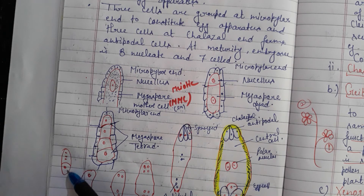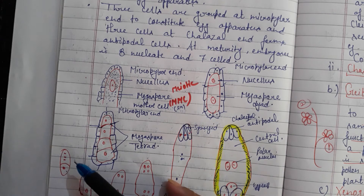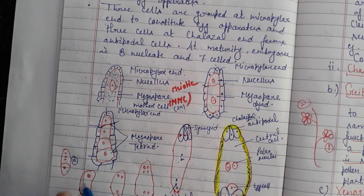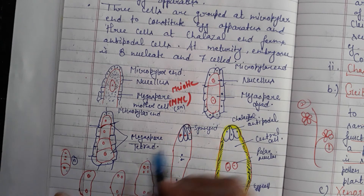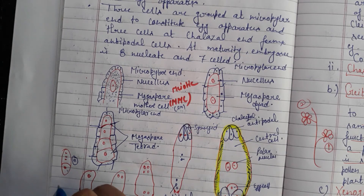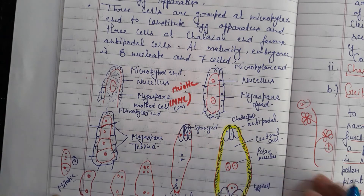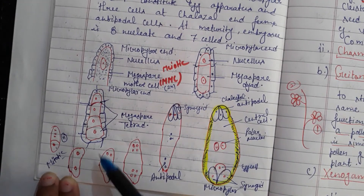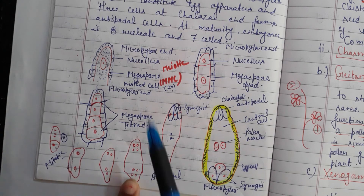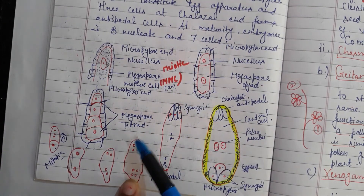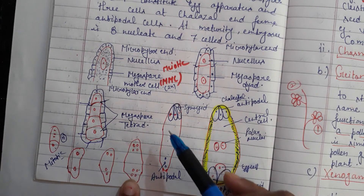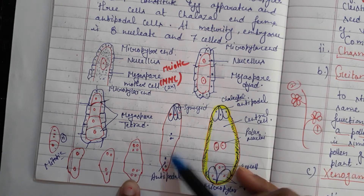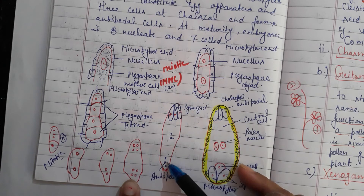After the second meiotic division, we get a tetrad of 4 haploid megaspores, of which 3 degenerate from the chalazal side. The remaining functional megaspore now undergoes mitotic division. The nuclei divide and increase: 1 → 2 → 4 → 8, giving an 8-nucleate 7-cell structure.